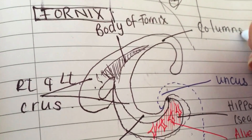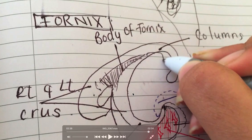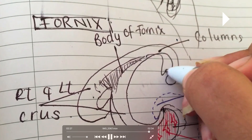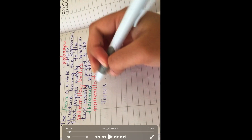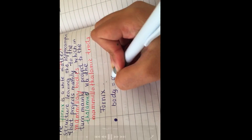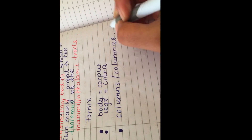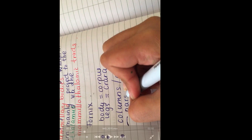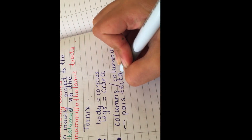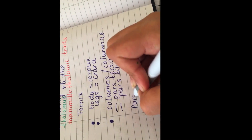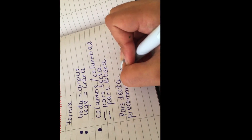Your body of fornix is here. After the body of fornix, when you come around your corpus callosum, the fornix splits into two columns — these are your anterior columns of the fornix. The fornix has a body, known as corpus, it also has legs known as crura, and it has columns. The body of the fornix splits on top of the corpus callosum into right and left anterior columns. Each column has two parts: pars libera — the free part — and pars tecta.